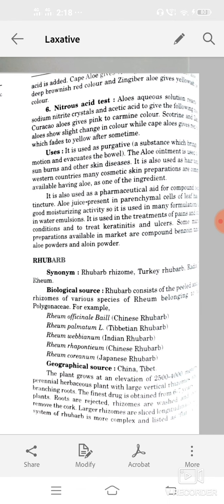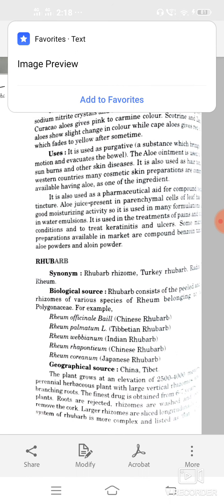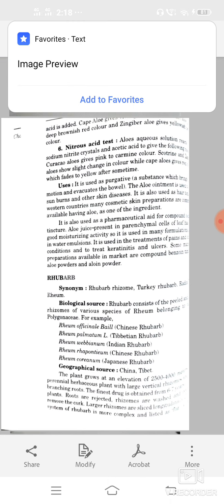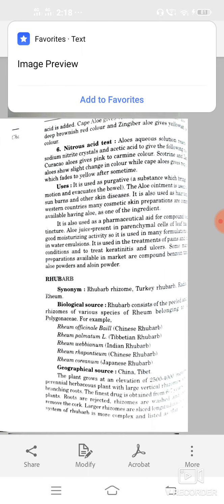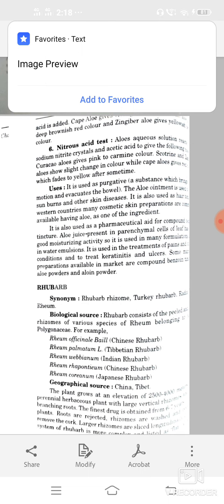Biological source: it consists of dried rhizomes of Rheum officinale, belongs to family Polygonaceae. Geographical source: it consists of China and Tibet. Plant grows at elevation of 2500 to 4000 meters. Finest drug is obtained from 6 to 7 years old plants. First roots or rhizomes are washed, peeled and remove the cork. Large rhizomes are sliced longitudinally.